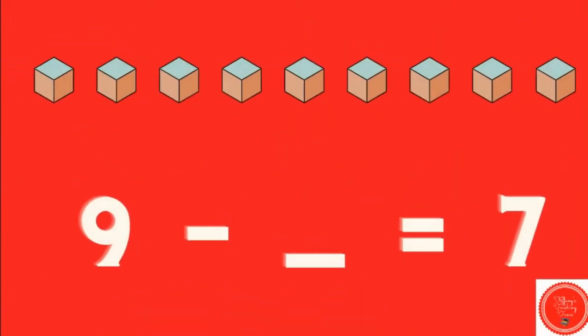Now we're going to subtract, and we're going to use the strategy of counting backwards. Nine minus what equals seven? So we're starting off with nine cubes, and I'm going to take away until I get to seven. We're going to count backwards as I cross out each one. So we have nine, eight, seven. I reached seven, so I'm going to stop there. How many did we cross out? Two. Nine minus two equals seven.